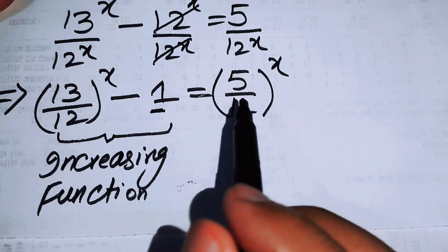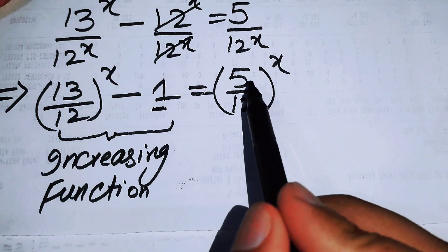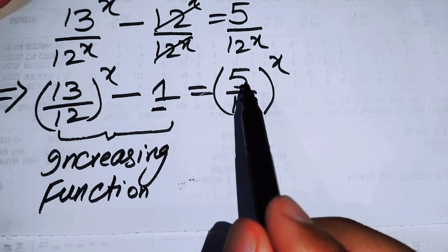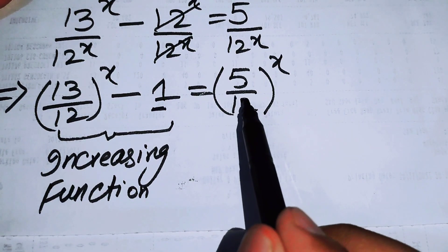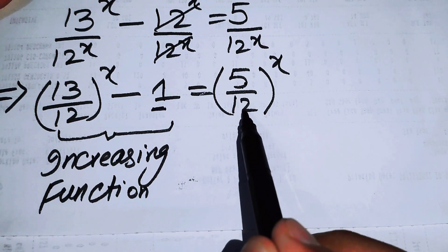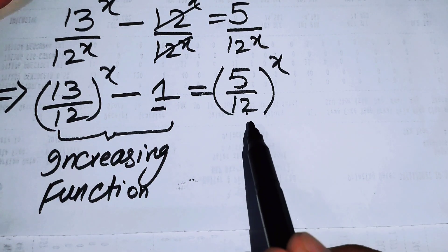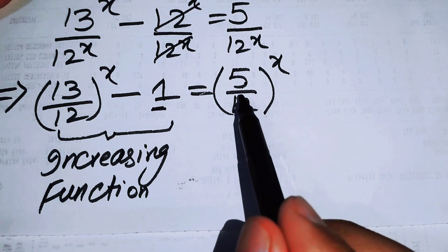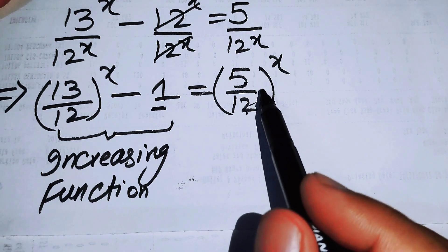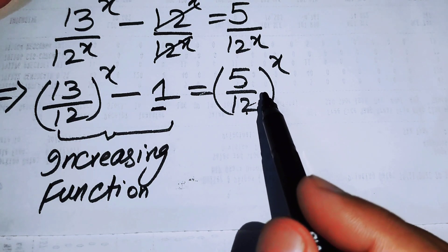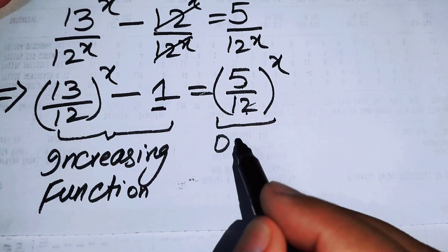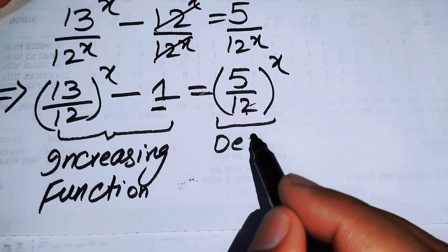Similarly, on the right-hand side, 5 is less than 12, so 5/12 is less than 1. When the base is less than 1, the exponential function gives values less than 1, and the function is a decreasing function. So the right-hand side is a decreasing function.